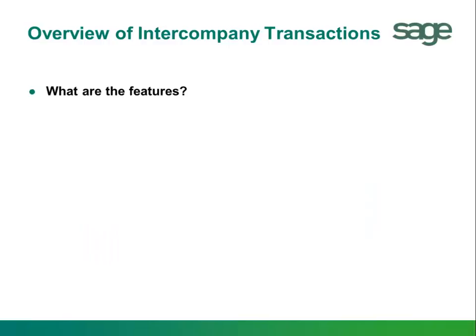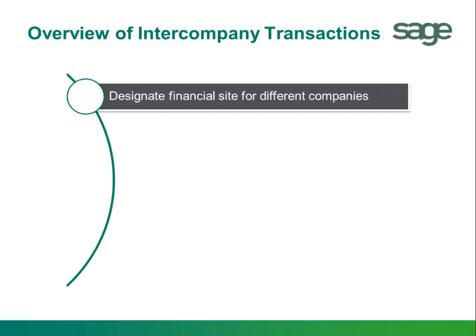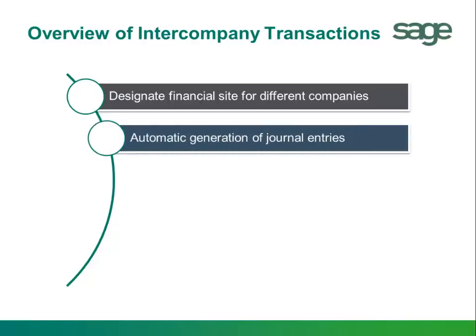What are some of the features available? The ability to designate a financial site belonging to a different company on both a supplier and customer invoice. Automatic generation of journal entries in the source — which could be the parent company — and the target — which could be the subsidiary company — using the offsetting due to and due from intercompany accounts set up in each company.